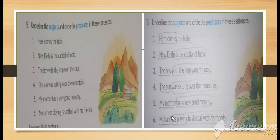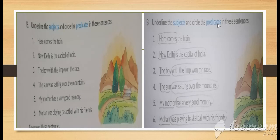The sixth example is Mohan. Mohan is a name, so it belongs to the subject. If any name is given — or pronouns like he, she, it, I, we, you, they — you can easily identify that it belongs to the subject. The other part of the sentence belongs to the predicate.